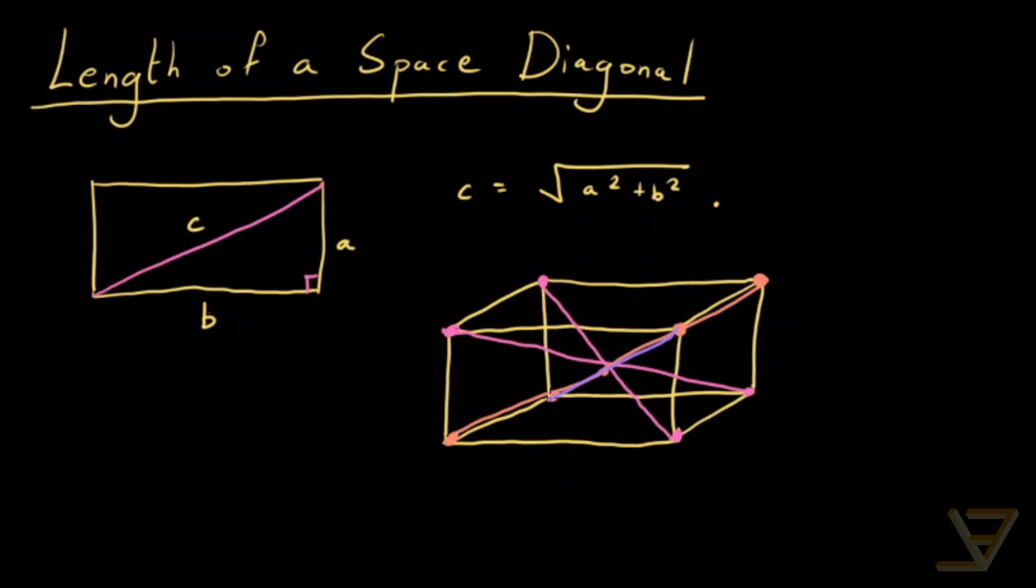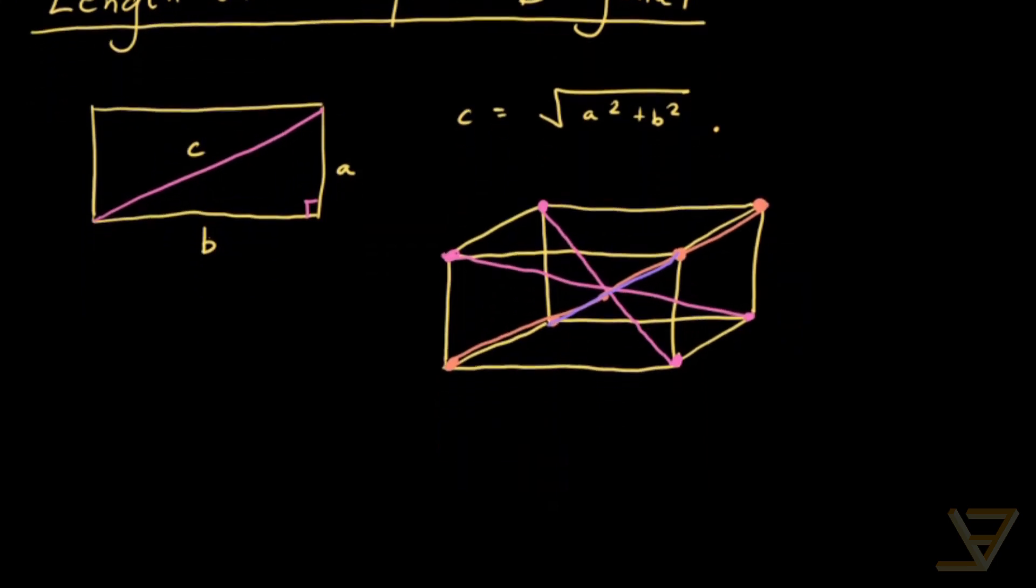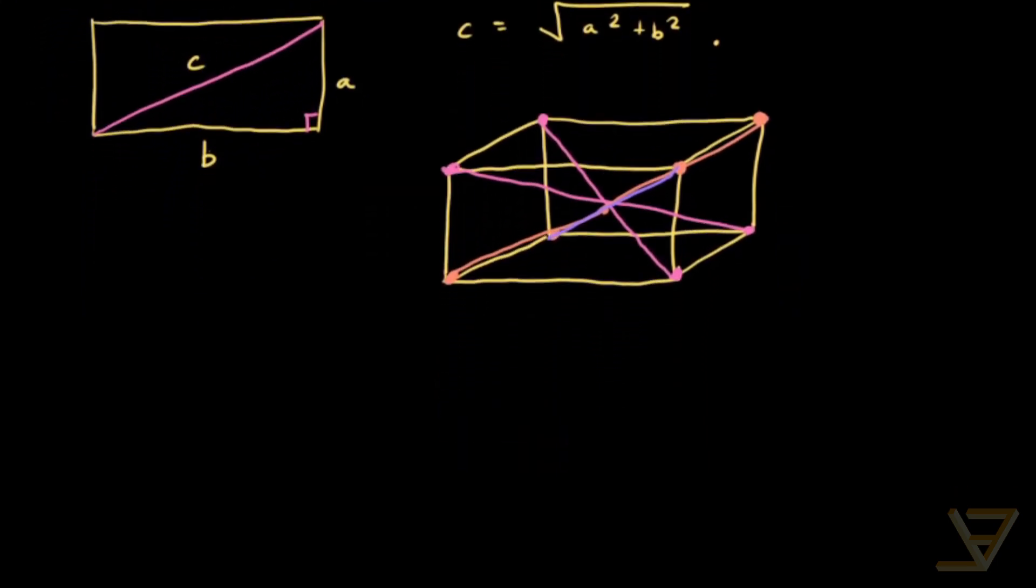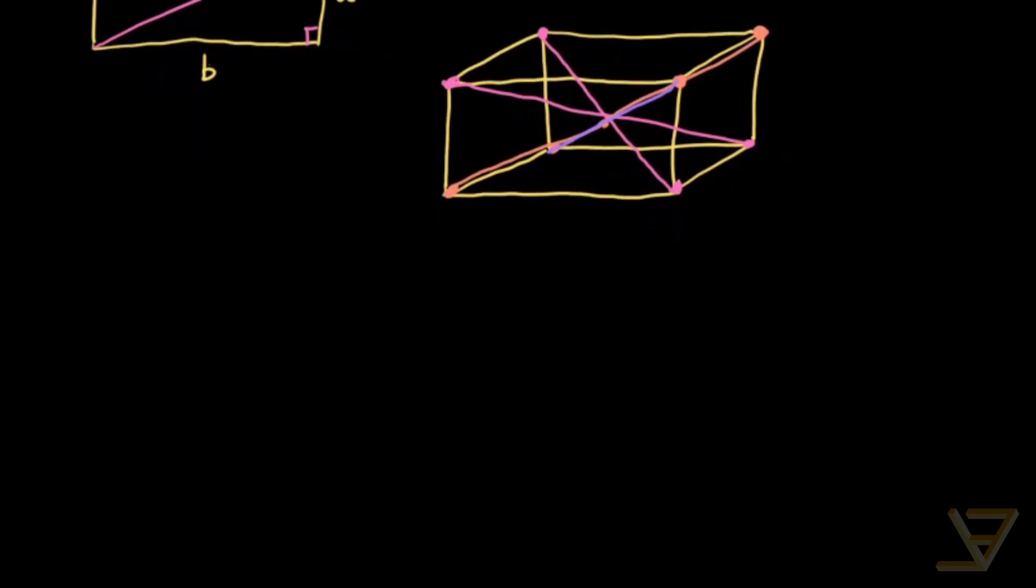So it's getting kind of messy, so I'll draw this again, so we have only one diagonal visible. But the idea that we want to pursue is finding the length of a space diagonal, which connects opposite vertices.